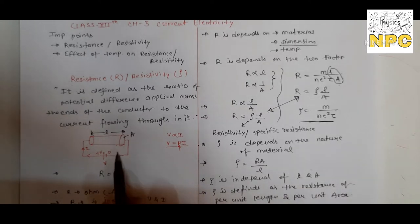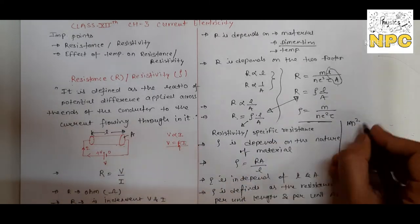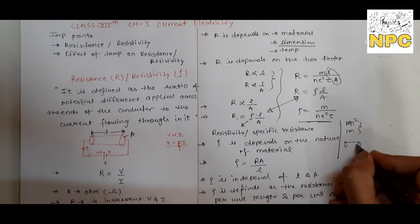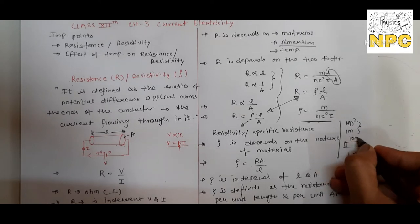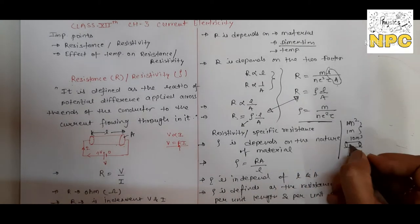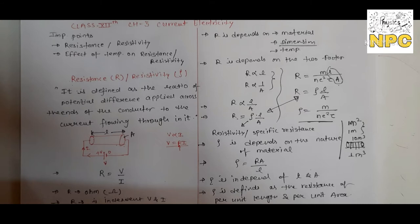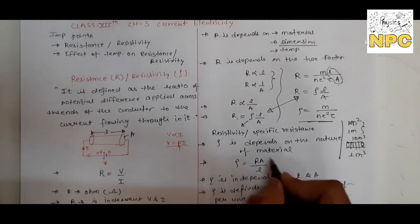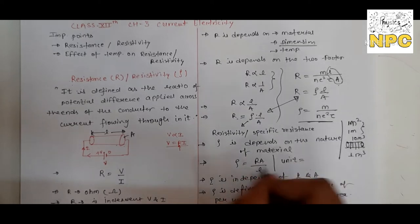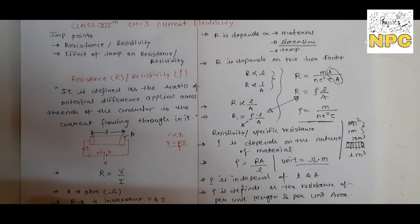Rho is defined as the resistance per unit length and per unit area. Simply put, if you consider the volume of the conductor — taking 1 square meter area and 1 meter length gives 1 cubic meter. Resistivity is the resistance in 1 cubic meter of the conductor material, which is why it is also called specific resistance. From the formula rho equals RA by L, the unit becomes Ohm times meter.